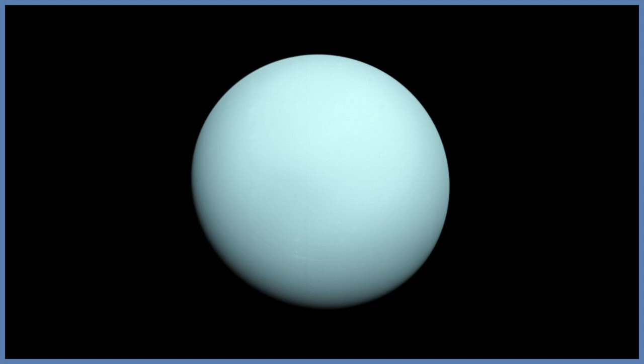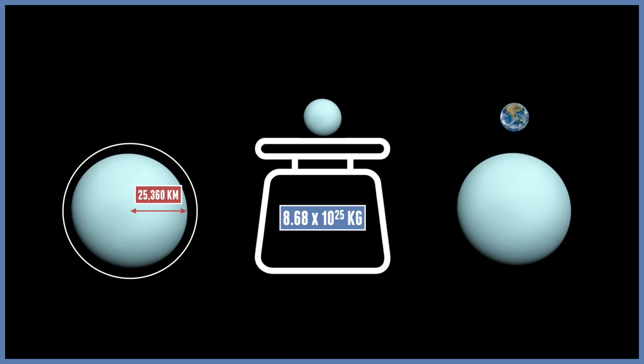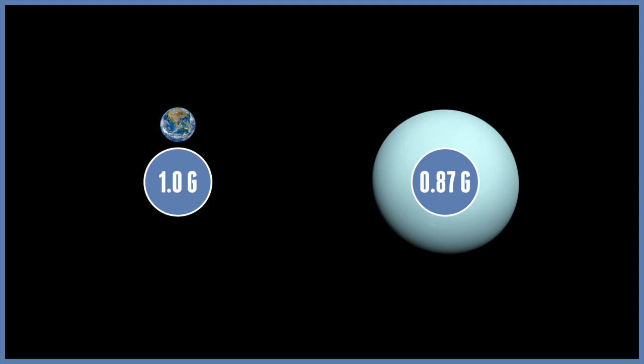Now we come to the outer solar system — the realm of the icy giants. Uranus is the third largest planet, at just over 25,000 kilometres, with a mass of 8.68 times 10 to the 25 kilograms — just over four times the size of Earth. But like the other gas giants, Uranus falls short on density, giving it only 8.69 metres per second squared — lower than 1g, at 0.87g.